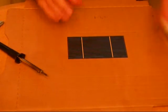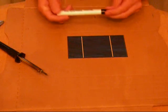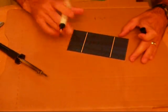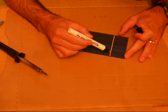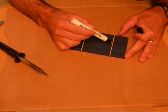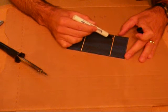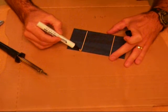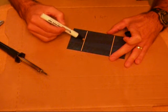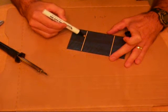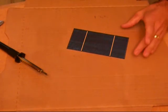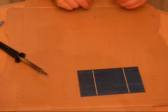The solar cells are extremely fragile, so you do have to be careful. Take your flux pen and go along the silver part on the solar cell, and do it to both sides. I'll let that dry for a few seconds.